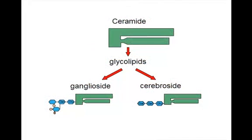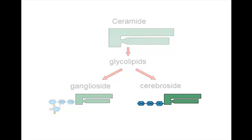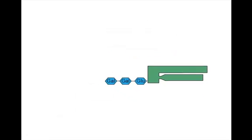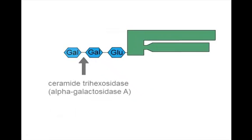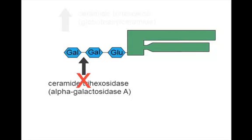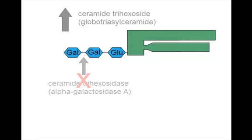Fabry disease involves the toxic storage of an accumulated cerebroside, derived from the basic ceramide molecule, as shown here. This cerebroside is normally degraded by the lysosomal enzyme alpha-galactosidase A. This enzyme cleaves the last galactose molecule from the ceramide. When the enzyme is defective, ceramide trihexacide accumulates and leads to cellular toxicity.